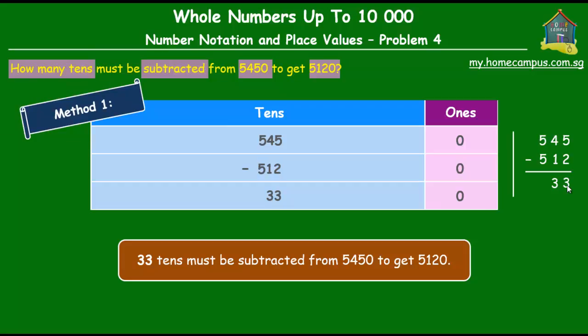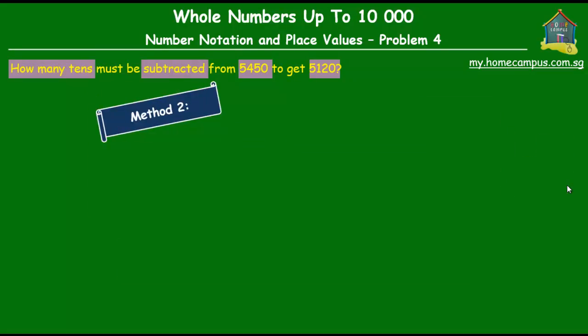That's just one of the two methods that you can use to solve this problem. The next method is, I'll show that here. In the next method, what you do is first, you subtract these two numbers. So, you subtract 5120 from 5450.